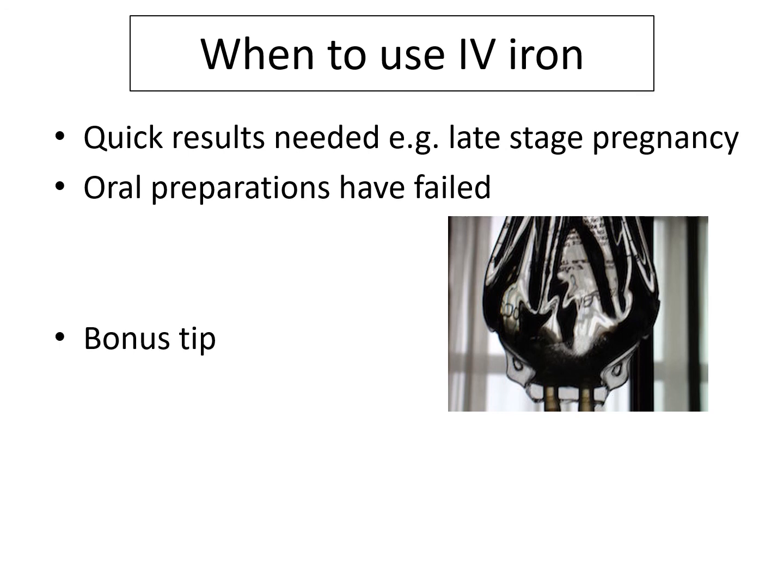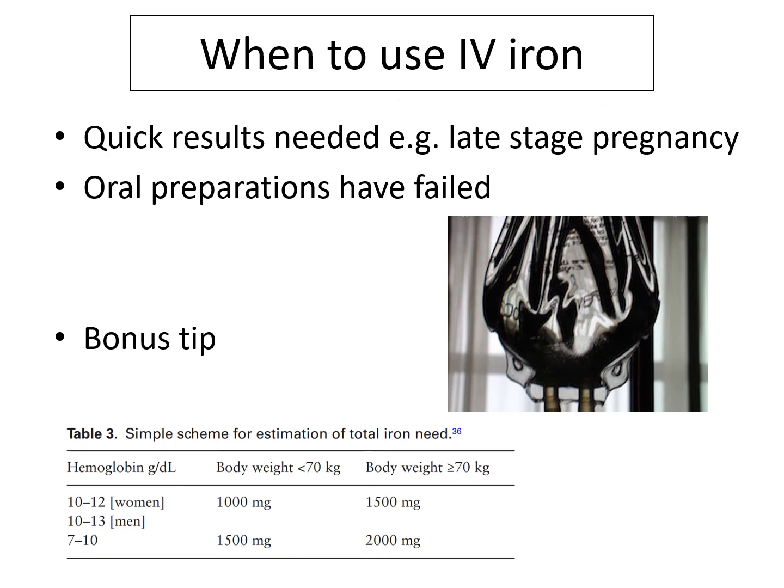And finally, a bonus tip: what puts people off IV iron is the dosing. The recent European inflammatory bowel disease guidelines recommended a simplified way of estimating iron need. It's reasonably accurate compared to other calculations, but if you're worried, just look at the product literature. Thank you very much for listening.